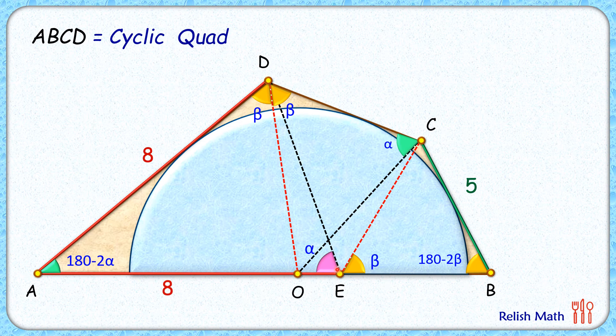In triangle CEB, by angle sum property we can say that angle C will be beta degrees. This triangle CEB is an isosceles triangle and thus length BE will be same as BC or 5 centimeters.